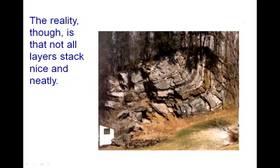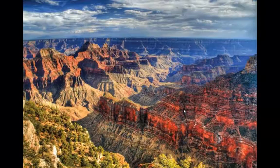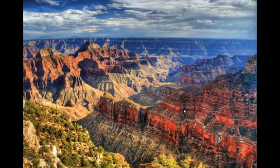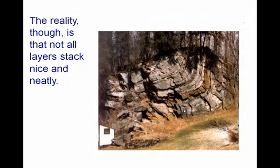We're going to start this up on unconformities. The law of superposition tells you where the older rock layers are — on the bottom — and it gets younger and younger as you move to the top. That's only if the rock layers are undeformed, if they stack up nice and neatly on top of each other. But in nature, that doesn't always happen.